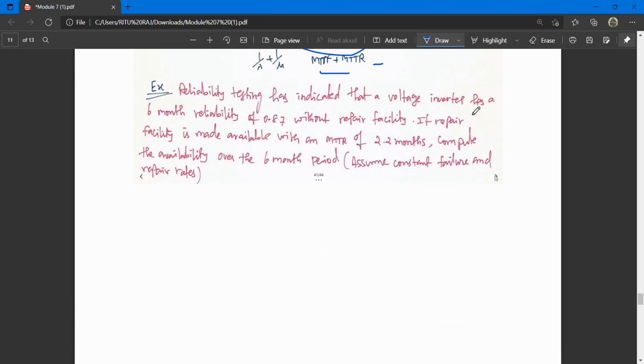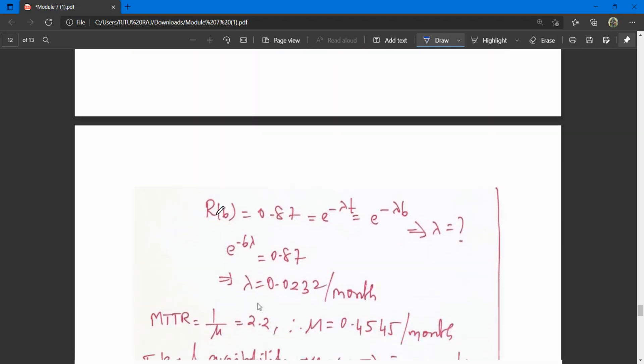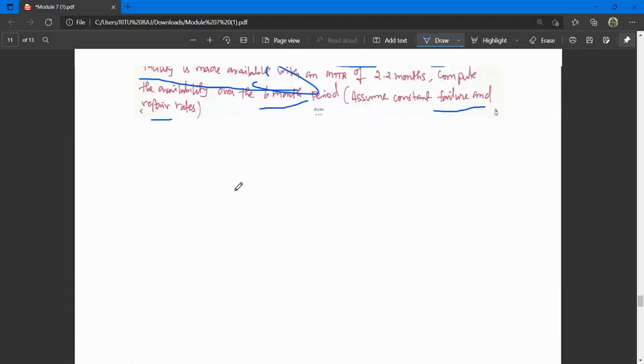Reliability testing has indicated that a voltage inverter has six-month reliability of 0.87 without repair facility. If repair facility is made available with MTTR of 2.2 months, compute the availability over six months assuming constant failure and repair rates.